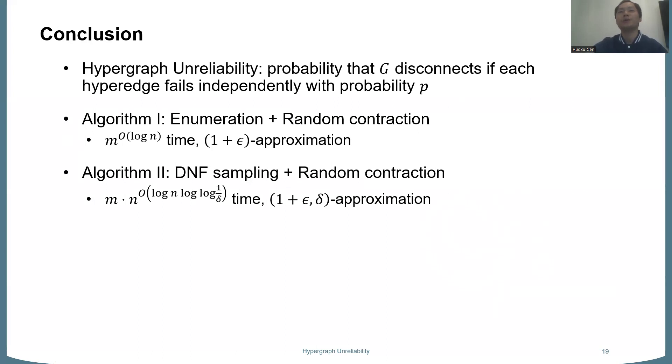Okay? So in conclusion, we consider this hypergraph unreliability problem. And we give two quasi-polynomial-time algorithms. So, yeah, a natural open question here is, can we obtain a polynomial-time PTAS, right? Polynomial-time one-plus-epsilon approximation for hypergraph unreliability. Yeah, thank you for your attention.